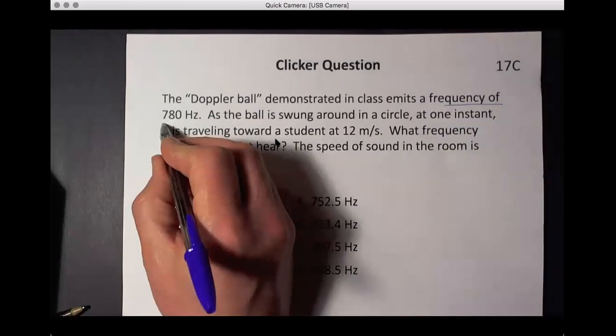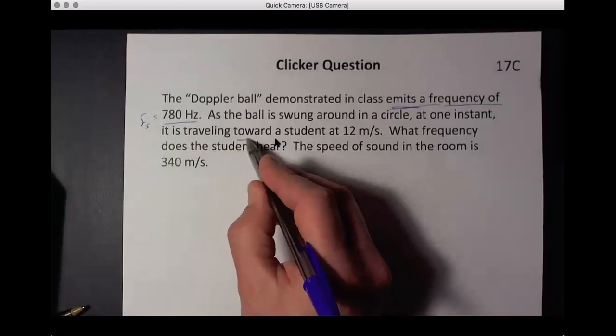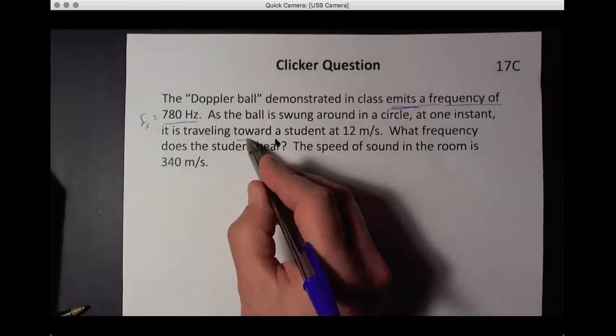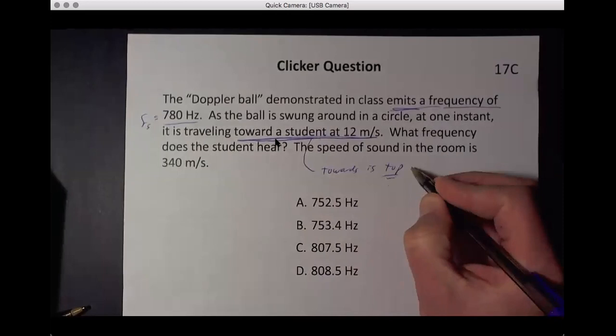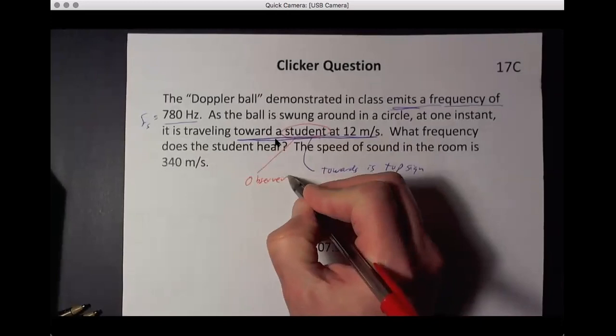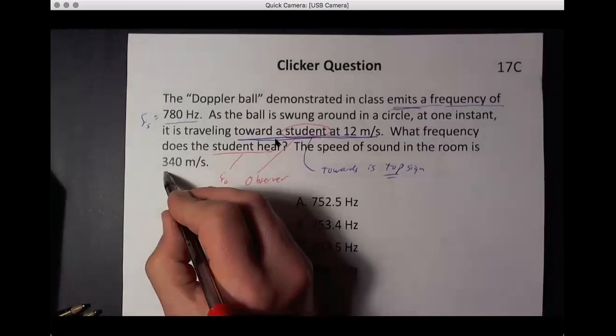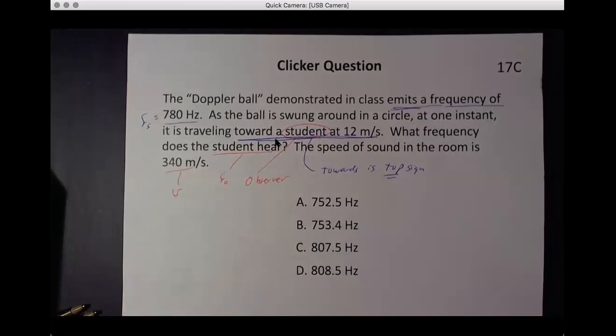And the observer was not moving. We weren't moving. So this term is zero. And then the source was either towards us, that's the top sign, or away from us, the bottom sign, depending on where that car was as it went past us. So let's, with that in mind, solve this problem. So the frequency of this, that's the Doppler ball, emits, so this is the source frequency. Swung around a circle at one instant, moving toward the student at 12 meters per second.